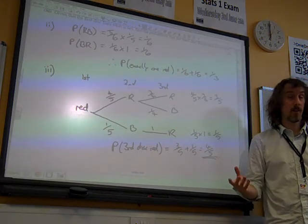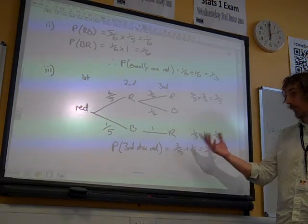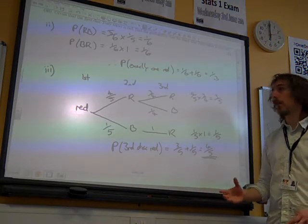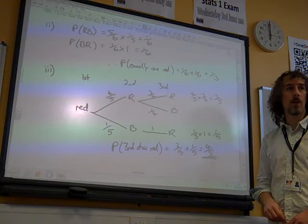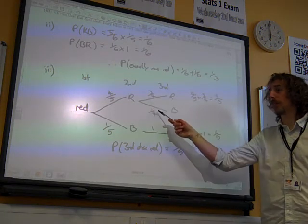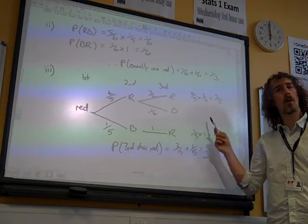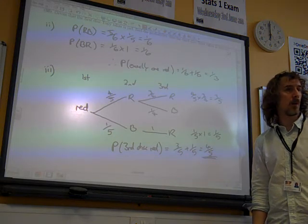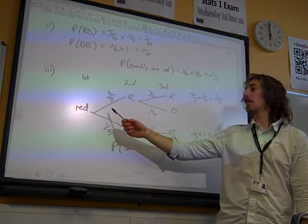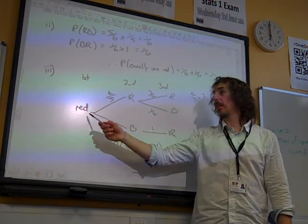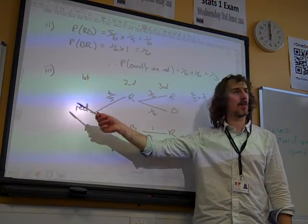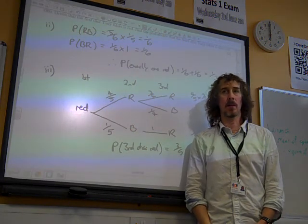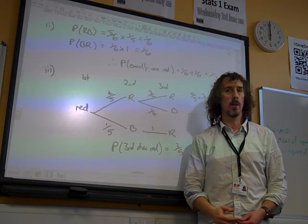Of course, we could have said that the third disc being red is the opposite, the complement, of the third disc being black. So we could have done one minus four-fifths times a quarter, which would have got us the same answer. The crucial thing is remembering that we don't associate a probability to this first one being red. It's given that that had happened, so we don't need to consider what the chance of that happening was.